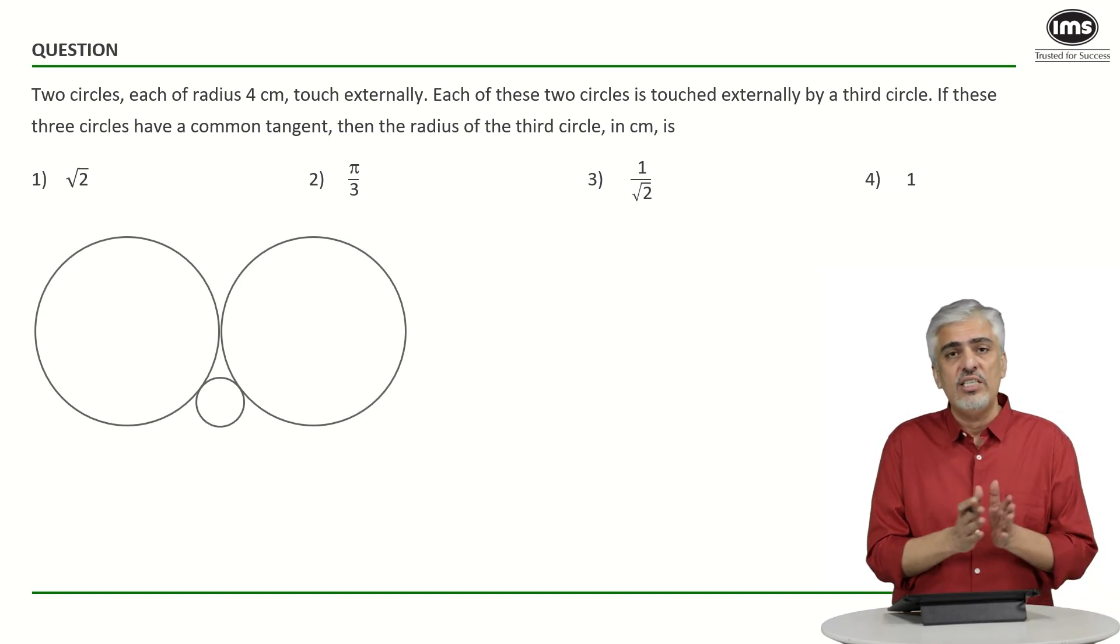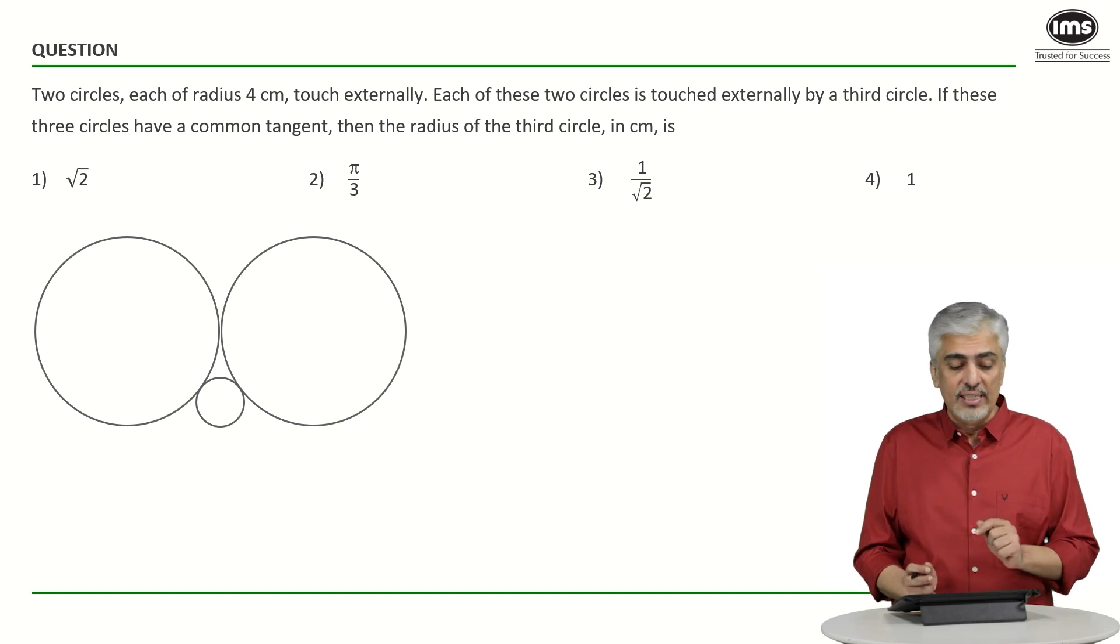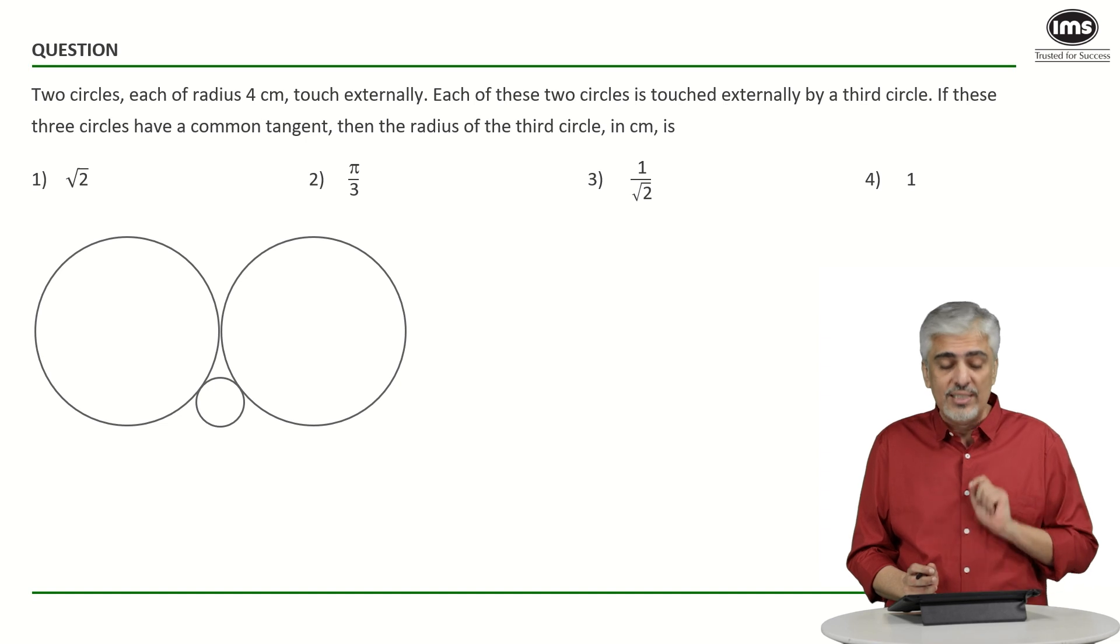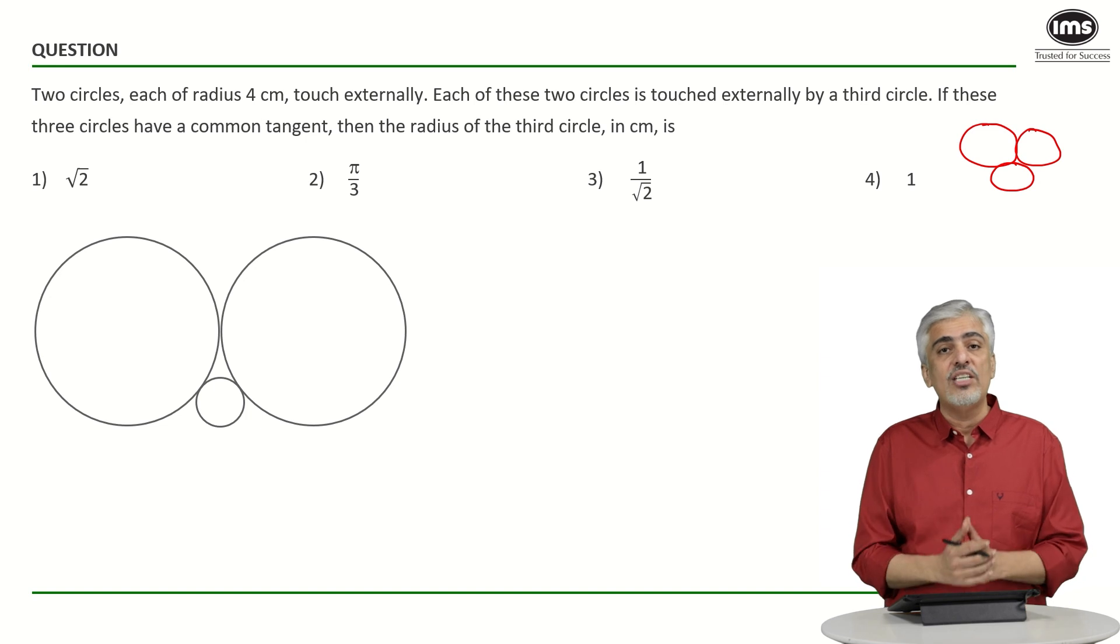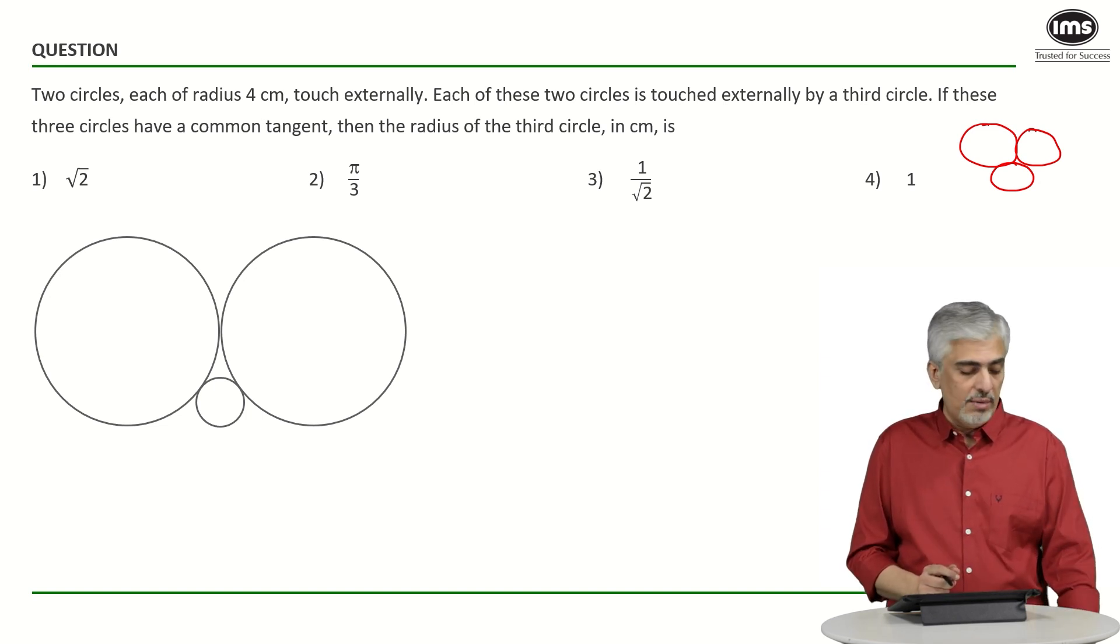We have the two circles which touch each other externally and third circle is also touching them such that all three circles have a common tangent and that is why the circle comes down. Understand that is very important. Normally when such a diagram comes in people think of three circles touching each other something like this. But then the common tangent would be difficult. So this is the diagram we are talking about. The common tangent can come over here.